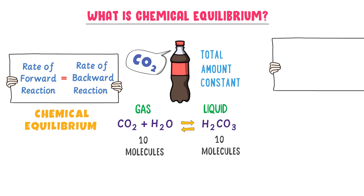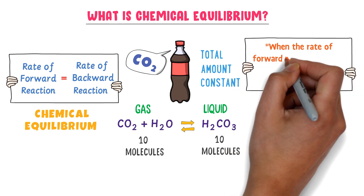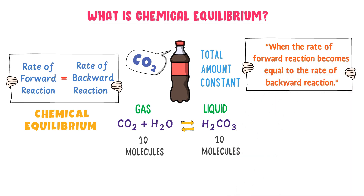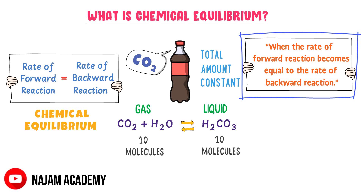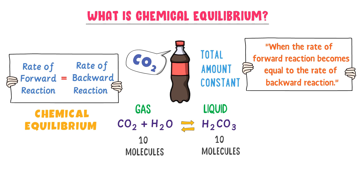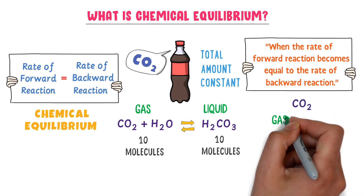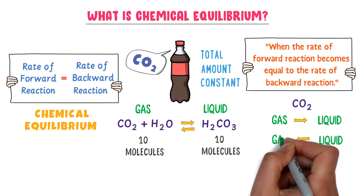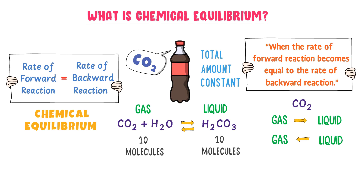We define chemical equilibrium as: when the rate of forward reaction becomes equal to the rate of backward reaction, this is called chemical equilibrium. Remember that at chemical equilibrium, carbon dioxide gas still converts to liquid phase and liquid carbon dioxide converts to gaseous state. We say that only their rates are equal. So this is the whole concept of chemical equilibrium.